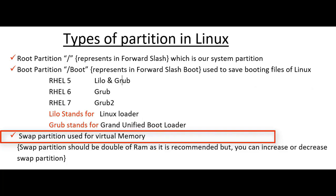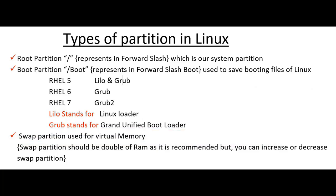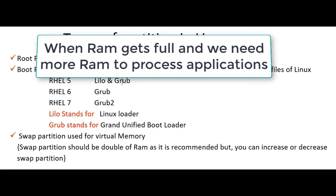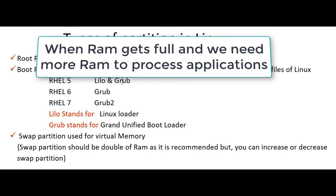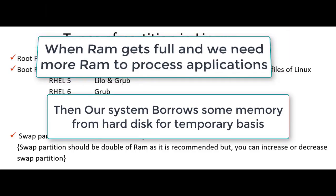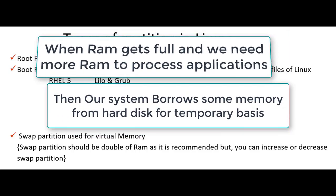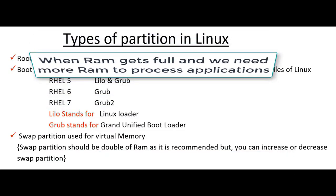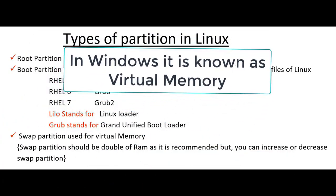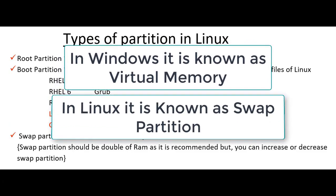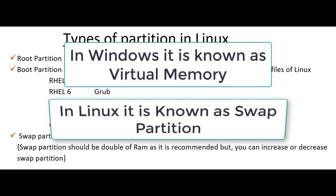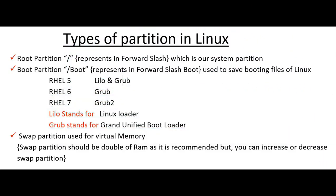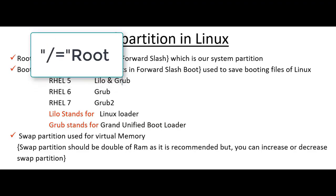Let me explain what virtual memory is with an example. In Windows, when RAM gets full and we need more RAM to run Photoshop or any other application, our system borrows some memory from the hard disk on a temporary basis so that it can run those applications or open any file. In Windows this is known as virtual memory, and in Linux it is known as the swap partition. The swap partition should be double the size of RAM as recommended by RHEL, but you can increase or decrease the partition according to your requirement. So this was Linux partitions — we discussed root, boot, and swap partitions.